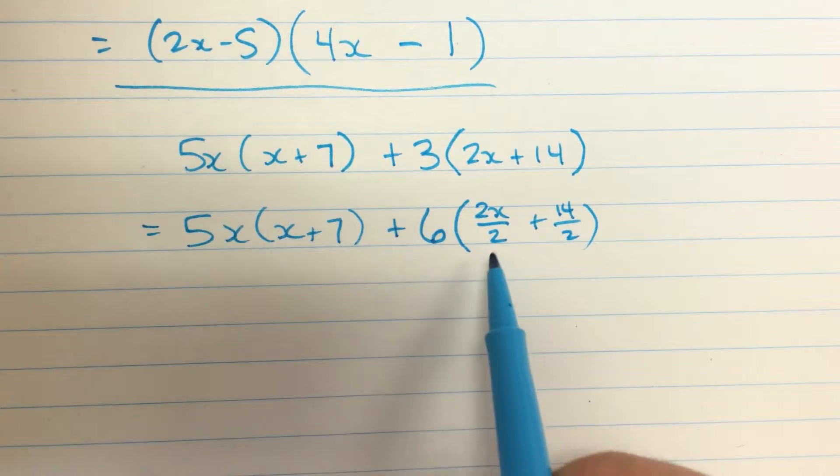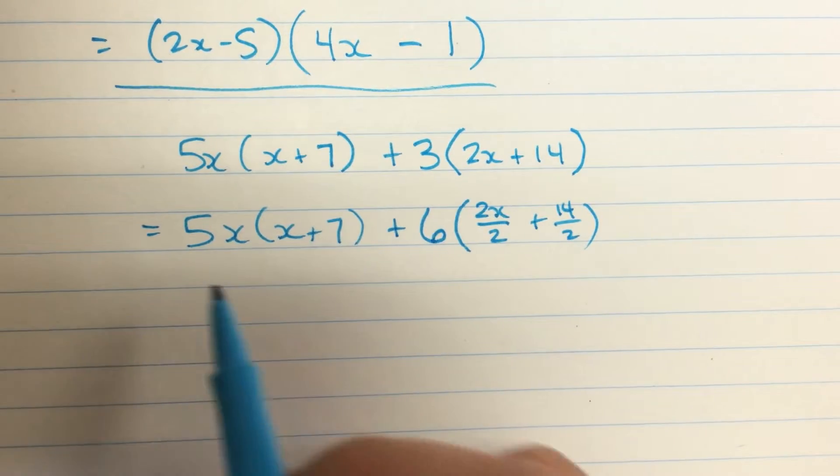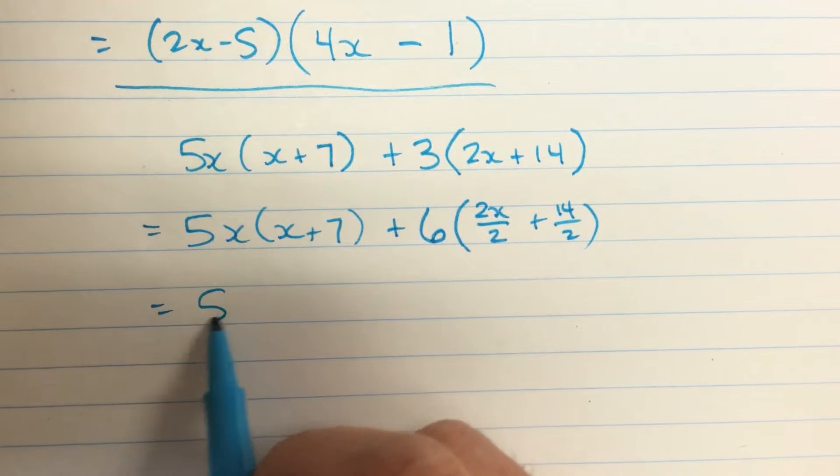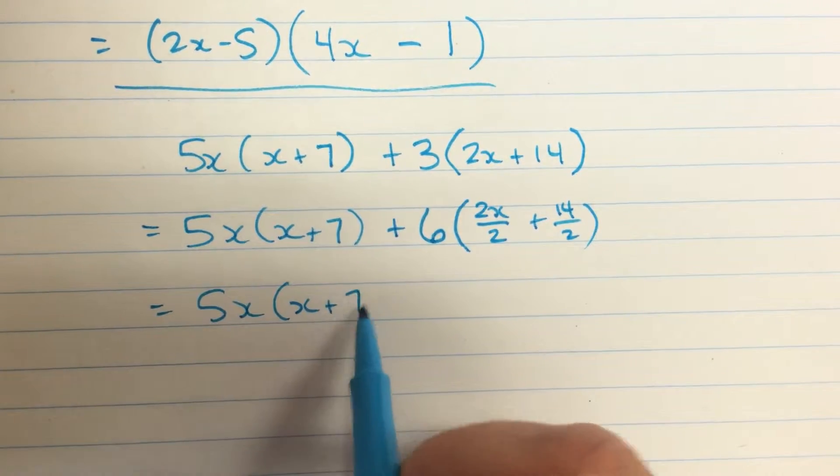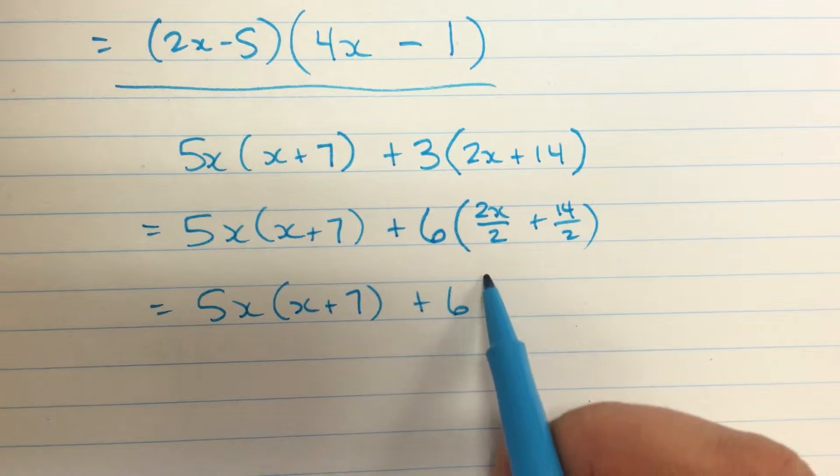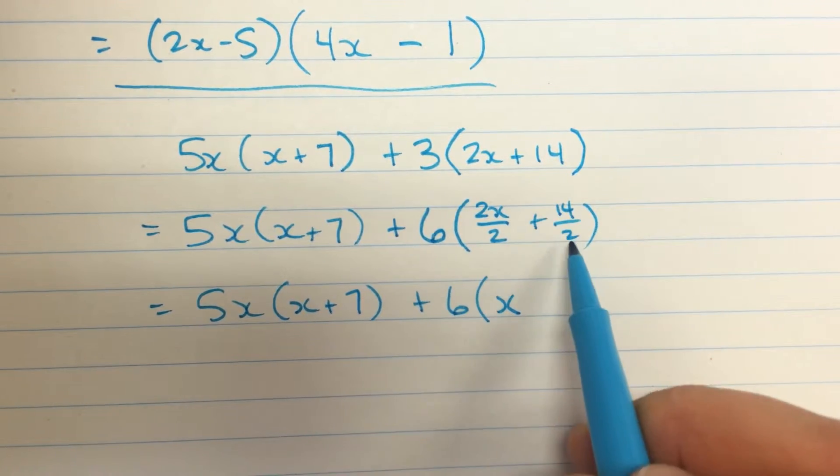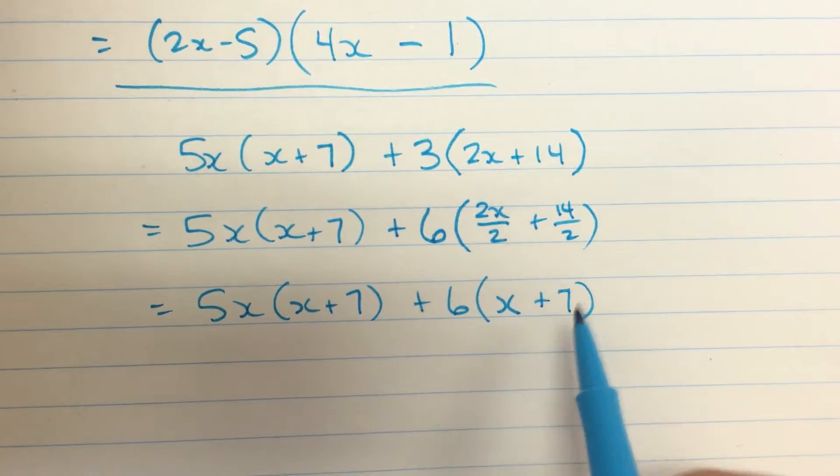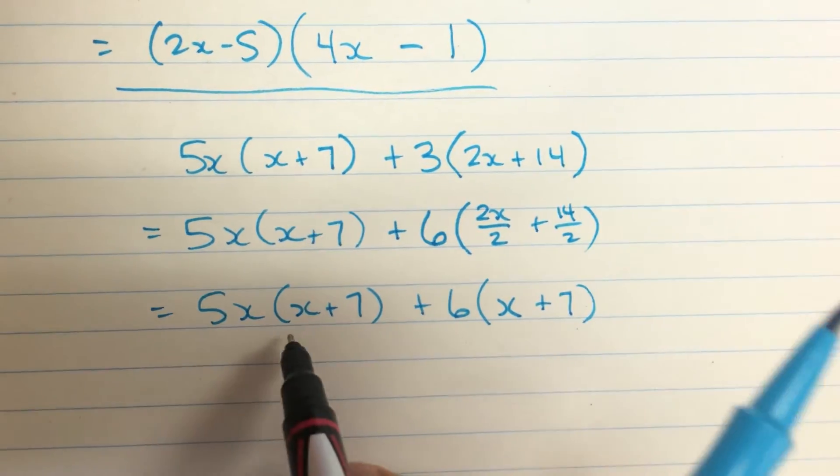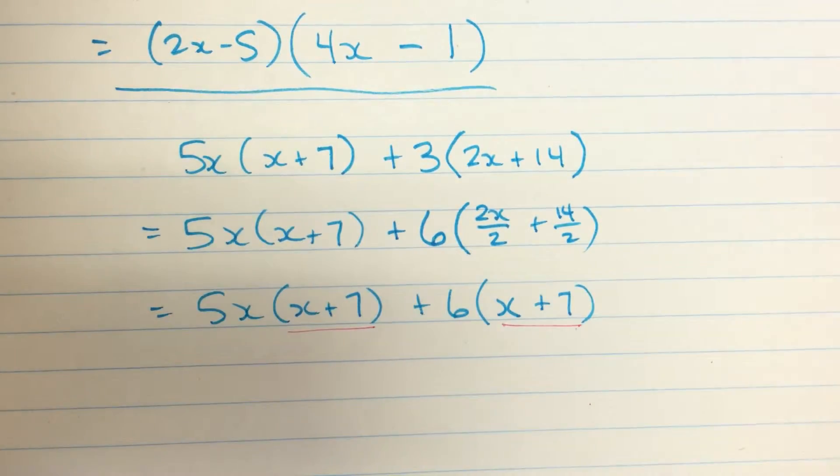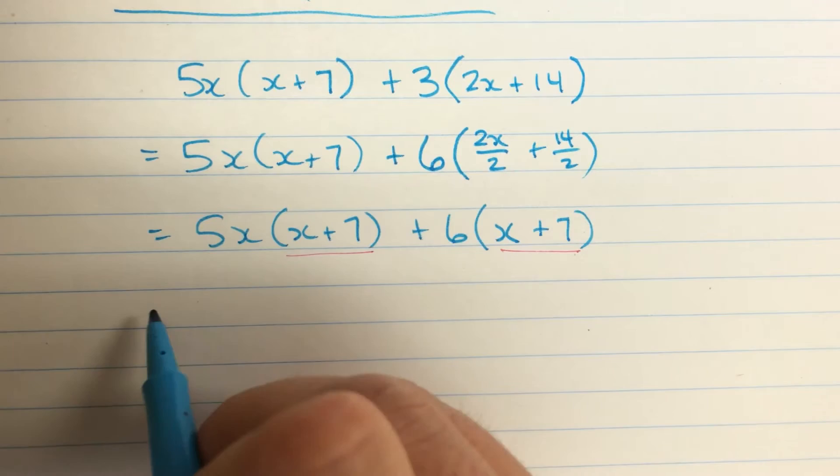And so I have to divide it inside to balance that operation. Let me just rewrite this now. 2 over 2 is 1, so I'm left with just x here. 14 over 2 is 7. And now I have the common binomial factor that I get to factor out of each term.